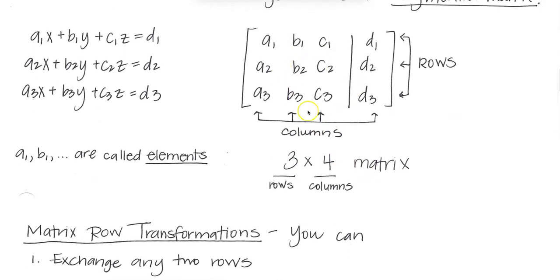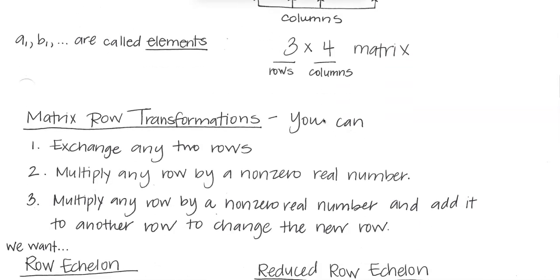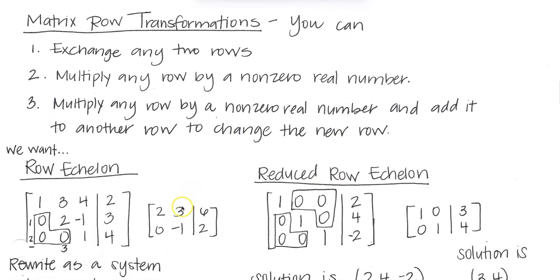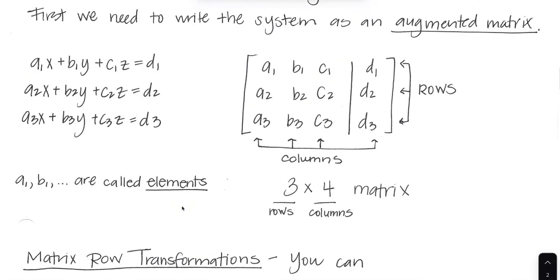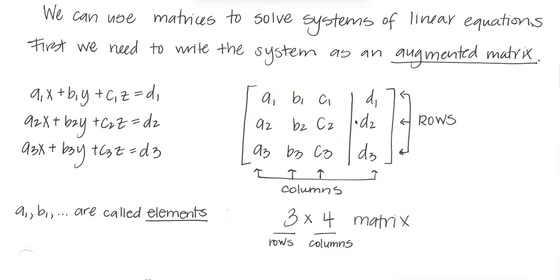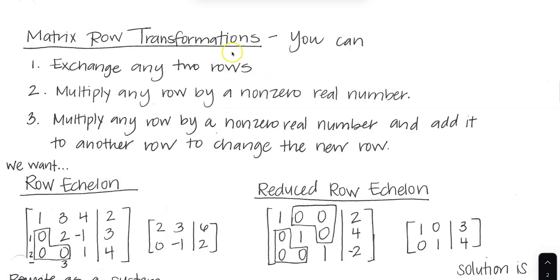Once we have the augmented matrix, there are row transformations we can perform. We can exchange any two rows, multiply any row by a non-zero number, or multiply any row by a non-zero number and add it to another row to create a new row. These are called elementary row operations.